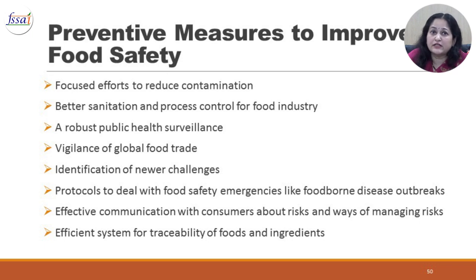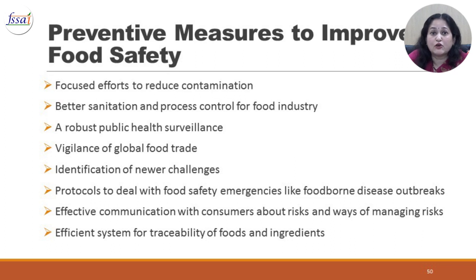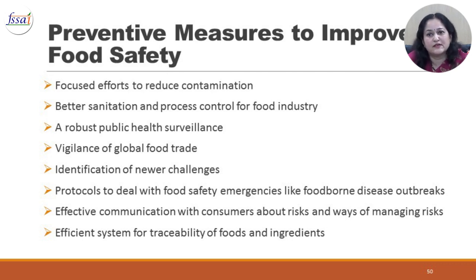Preventive measures to improve food safety in general include a focused effort to reduce contamination, better sanitation and process control for the food industry, a robust public health surveillance system, vigilance about the global food trade to ensure that other countries do not dump tainted food, identification of newer challenges, protocols to deal with food safety emergencies like foodborne disease outbreaks, effective communication with consumers about risks and ways of managing risks, and an efficient system for traceability of foods and ingredients to track where contaminants are coming from.